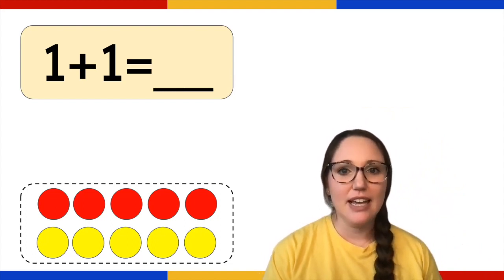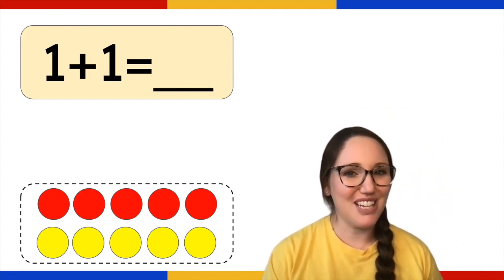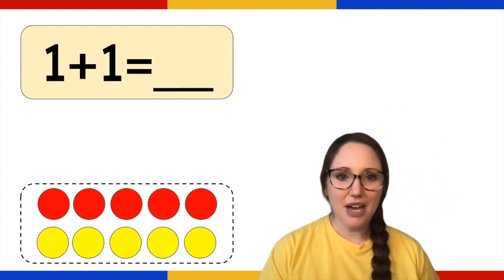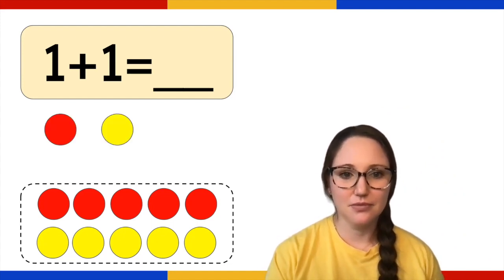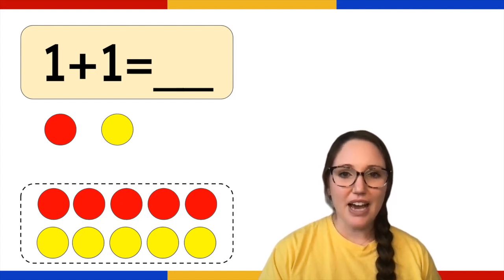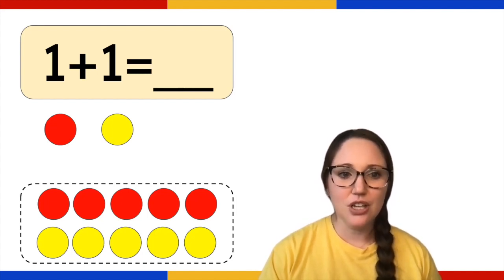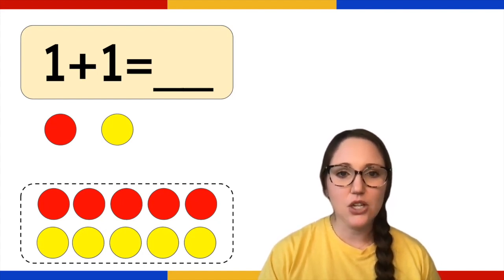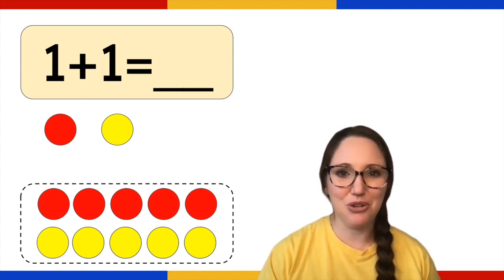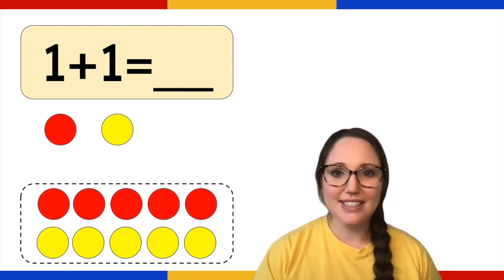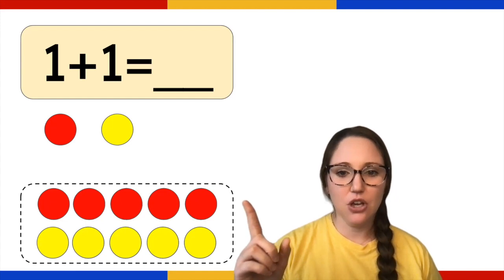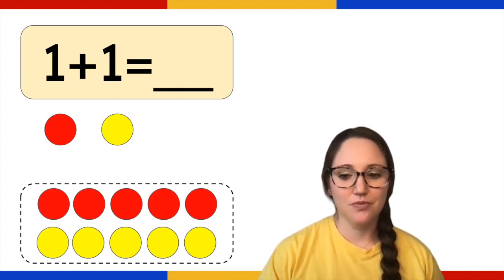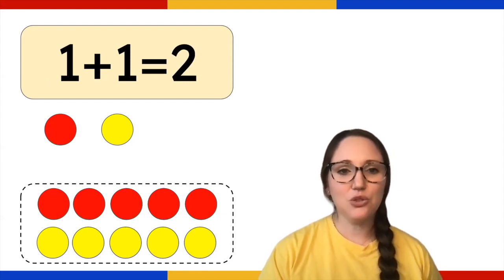Our first number sentence is one plus one. We're going to start out with an easy one. I want you to take the materials that you have and create a picture for this number sentence. See how I have two different materials, a yellow counter and a red counter, to represent one plus one. Go ahead and do the same with your objects. Now write your number sentence down and write the answer. Count the objects to get your answer: one plus one, you'll count one, two. One plus one equals two.